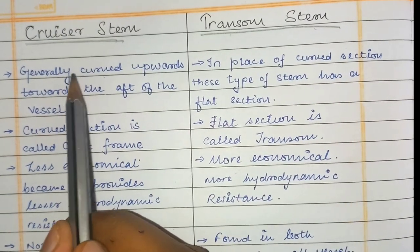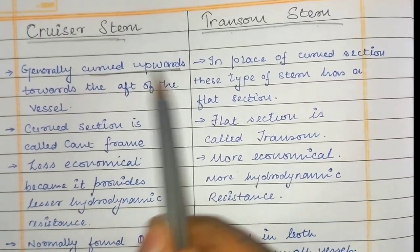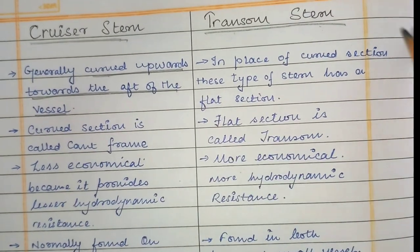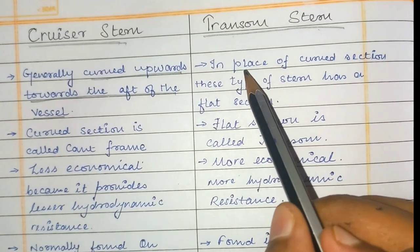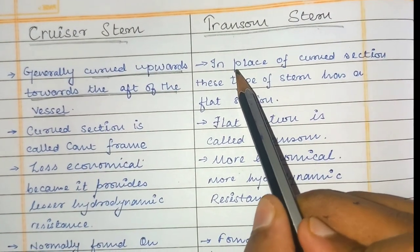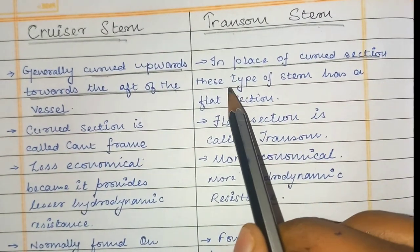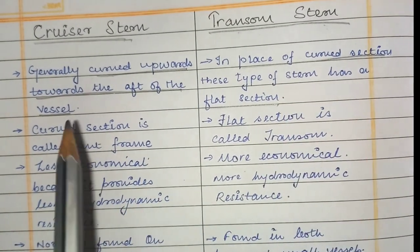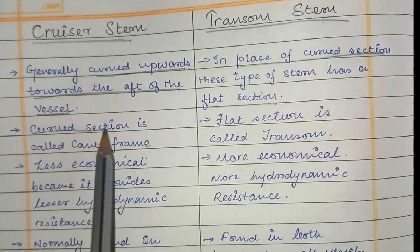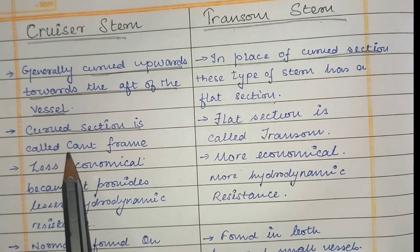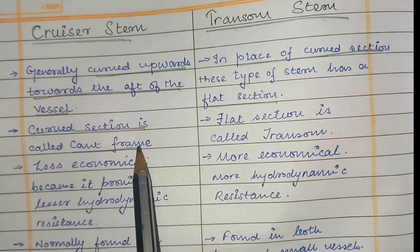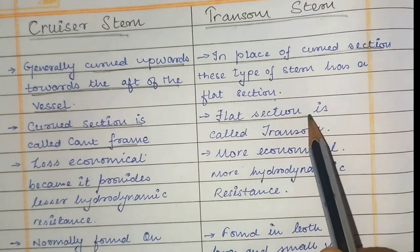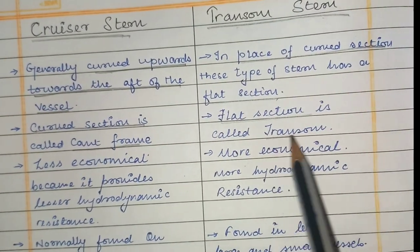Cruiser's turn is curved upwards towards the aft of the vessel, whereas for transom's turn, in place of a curved section we have a flat section. The curved section of the cruiser's turn is called the cant frame, whereas the flat section of the transom's turn is called the transom.